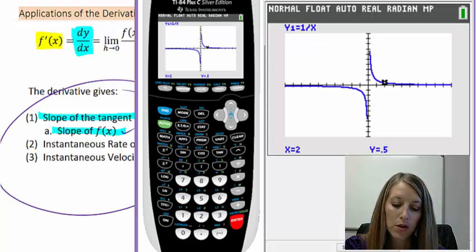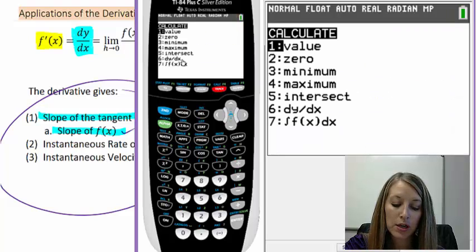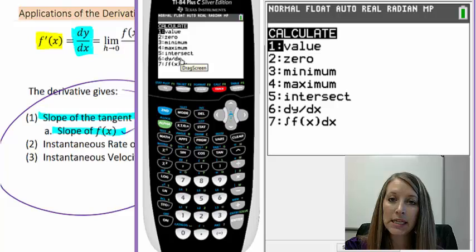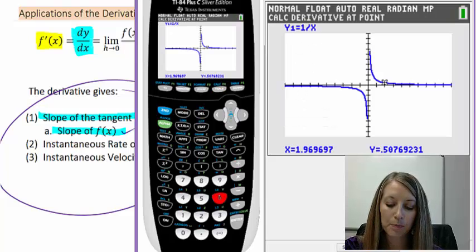The way that we check this is underneath calculate. Second, and then calculate, and notice option number six, dy dx. That is one of the notations that we can use for derivatives. We're going to use option number six. You can either scroll down to six and push enter, or I'm just going to hit the six option here.